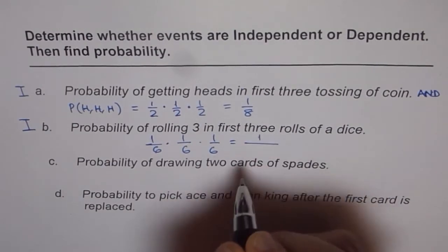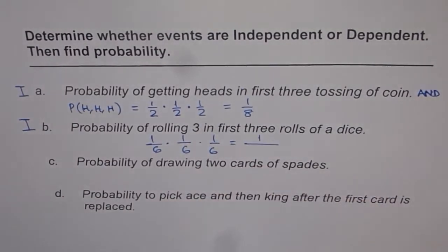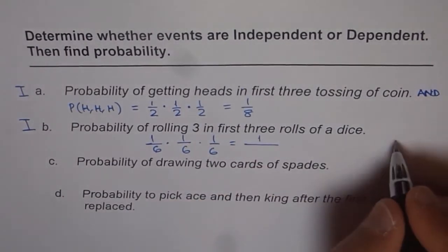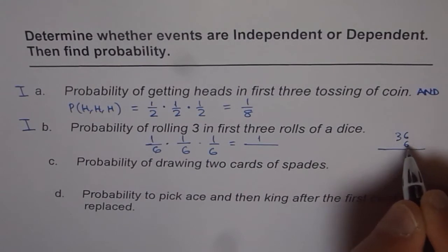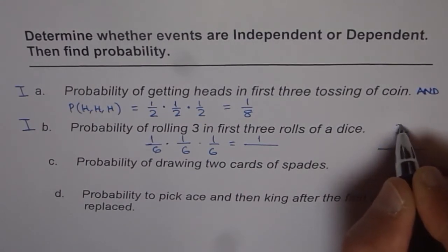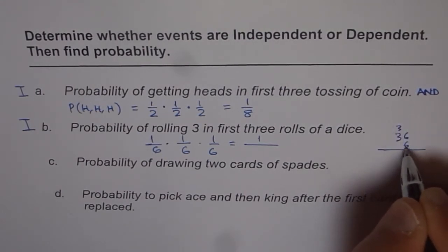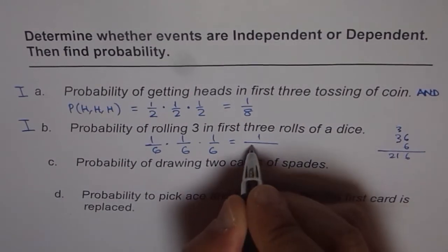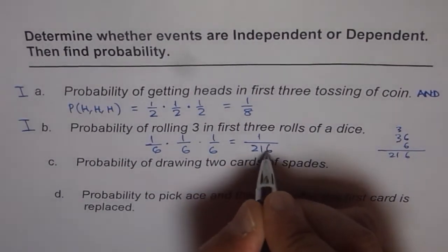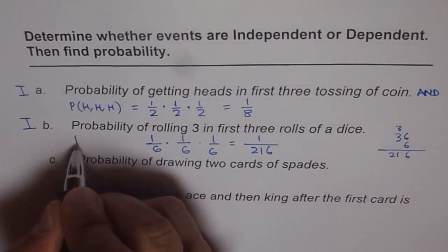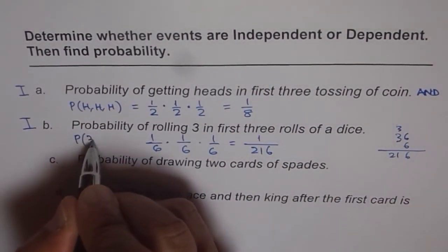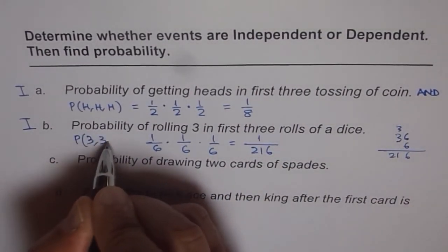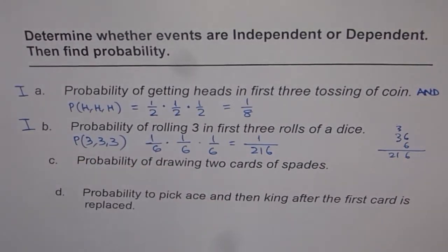One over six times one over six times one over six — that is one over six cubed. Six times six is thirty-six, and thirty-six times six is two hundred and sixteen. So one over two hundred and sixteen is the probability of getting three on all three rolls of the dice.